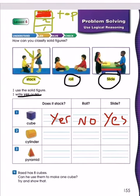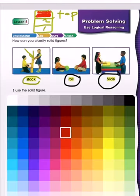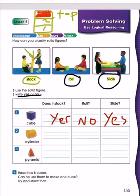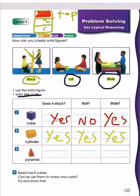The second shape is a cylinder. Can the cylinder stack? Yes. Can it roll? Yes. Can it slide? Yes, of course.